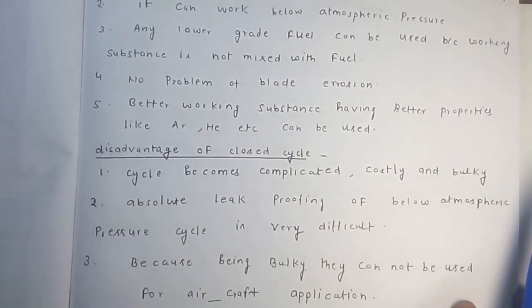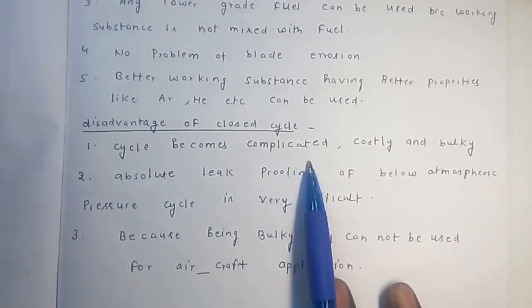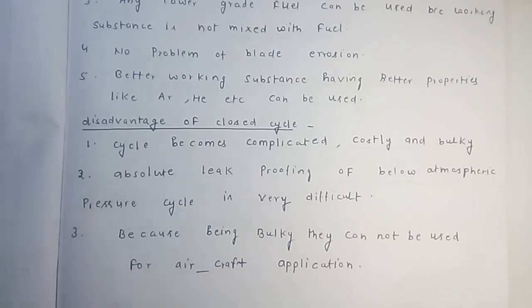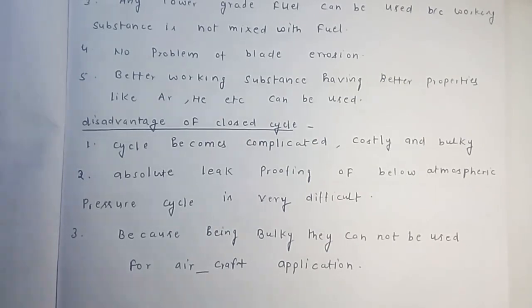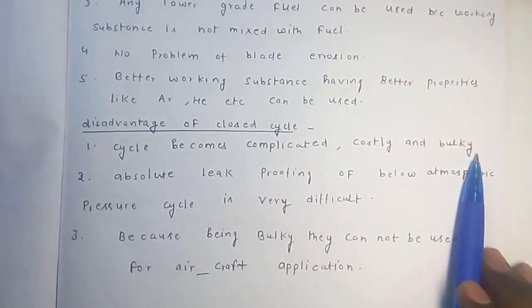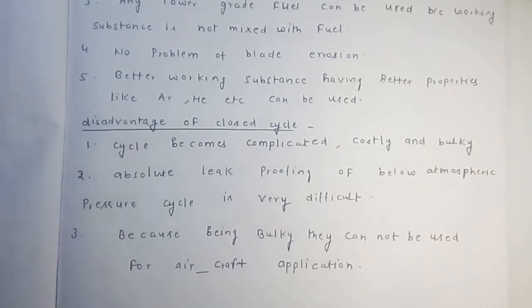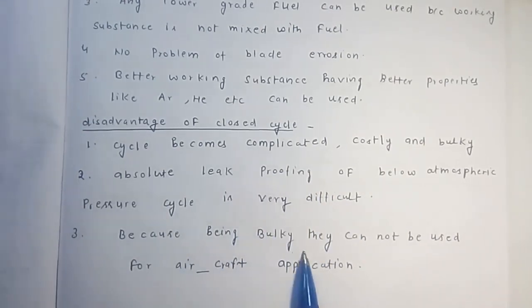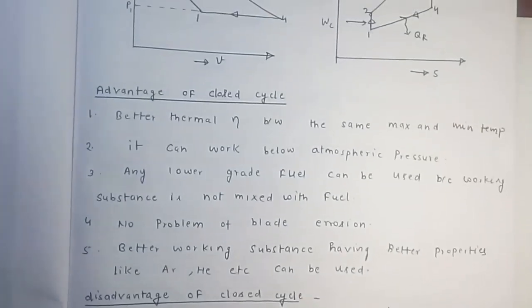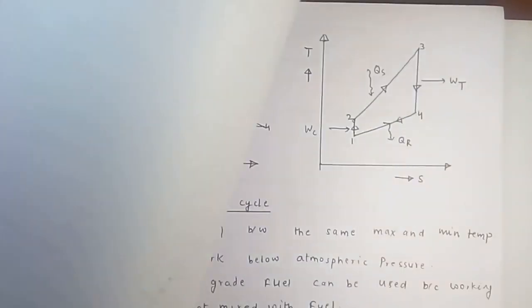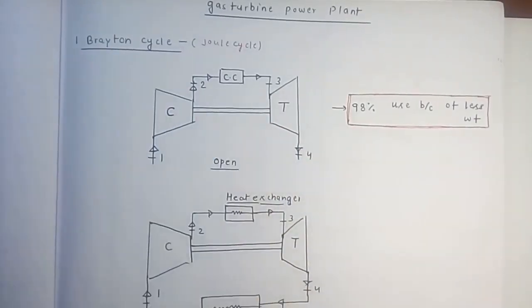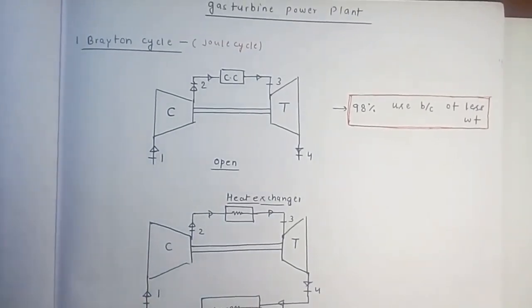Disadvantages of closed cycle: An additional component is added — the intercooler — so the original three components (turbine, combustion chamber, compressor) become four (turbine, heat exchanger, compressor, intercooler). This makes the cycle complicated, costly, and bulky. Working below atmospheric pressure requires absolute leak proofing, which is very difficult. Because of being bulky, closed cycle gas turbines cannot be used for aircraft applications. That is why open cycle is used 98% of the time — especially for aircraft — because of less weight.